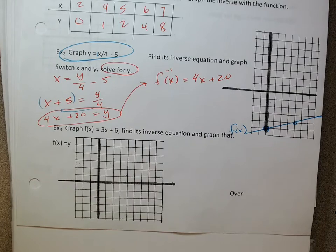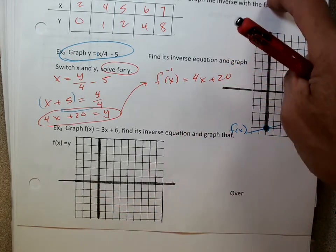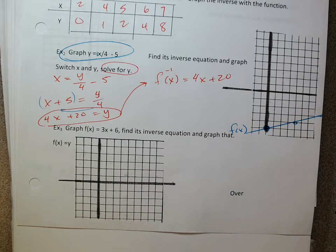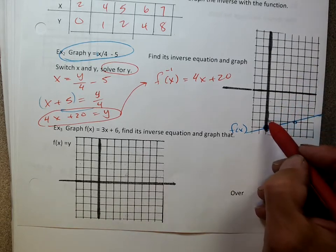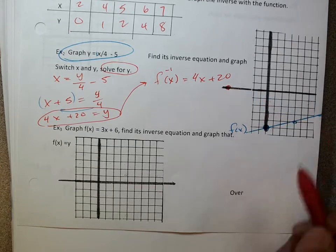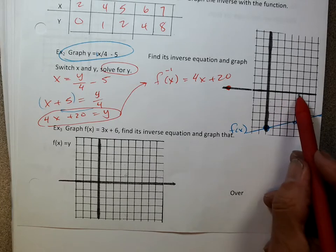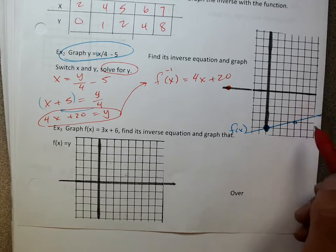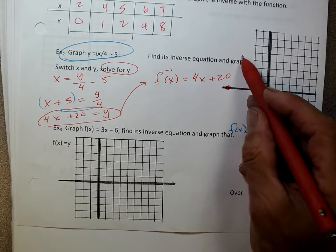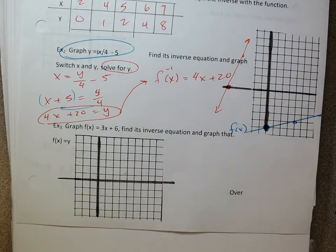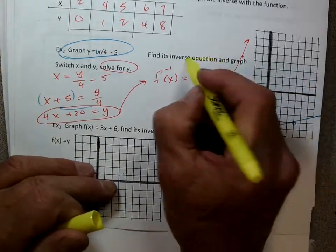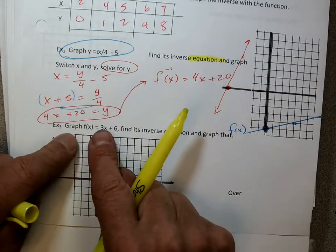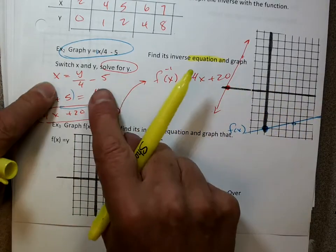f of x and y are the same thing. If I could go all the way up to 20 I would, but it's off my graph. I can put down a couple of points to sketch the inverse graph. So the inverse graph would look something like that. If we need the inverse equation, we switch x and y and solve for y. Got it?